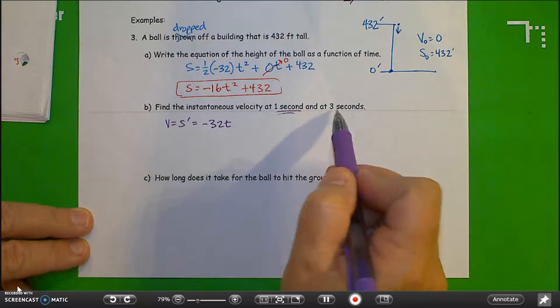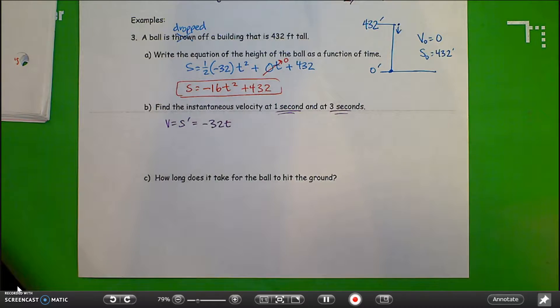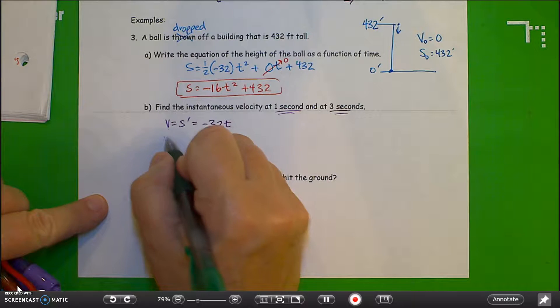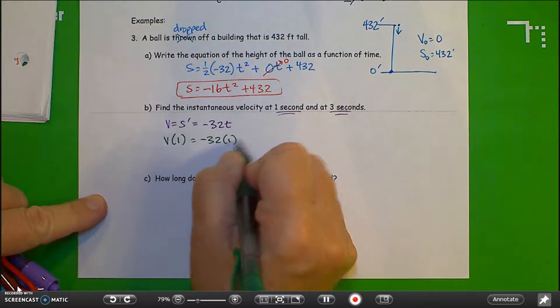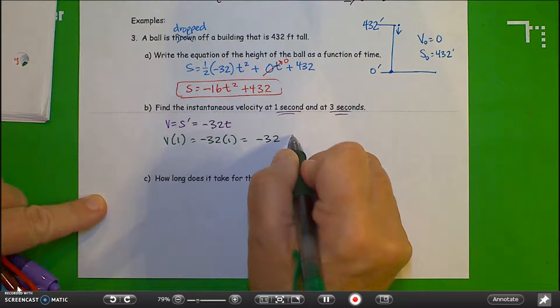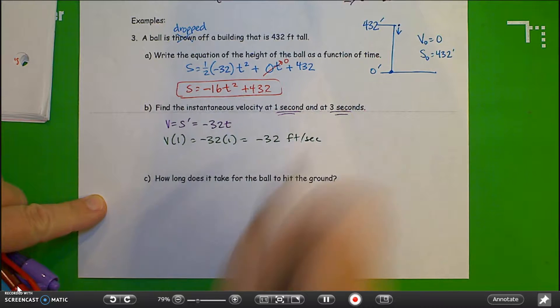They want the velocity at one second and three seconds. So we just simply plug that in. So velocity at one second equals negative 32 times one, or negative 32 feet per second. Always include your units.